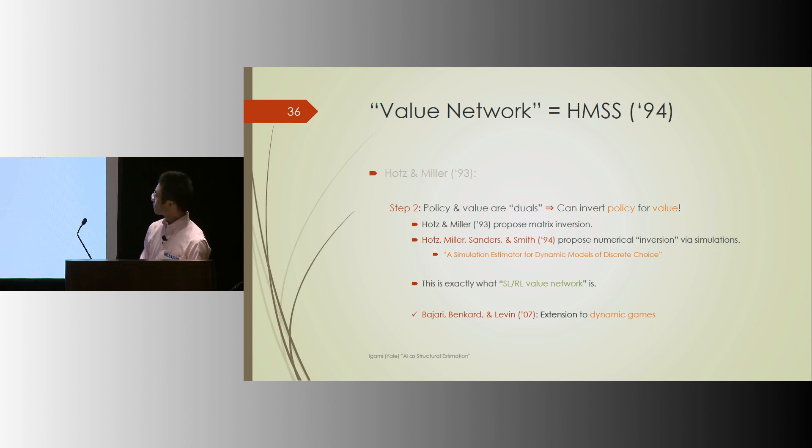The reason this method worked is the following. The optimal strategy, or optimal policy, and optimal value functions are duals. They both represent the solution to the same dynamic programming problem. Hotz-Miller 93 proposed matrix inversion to invert policy for value, but that was kind of messy. So the next year Hotz-Miller-Sanderson-Smith 94 proposed the use of forward simulations to numerically sort of invert the policy function to get value or underlying parameters. And that's how this value network is being constructed.